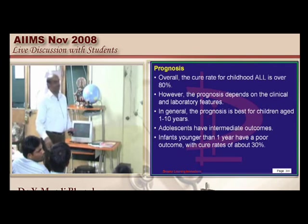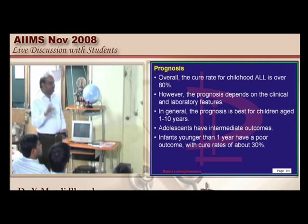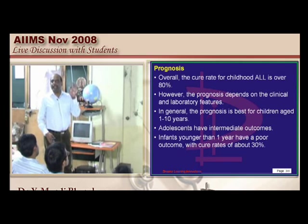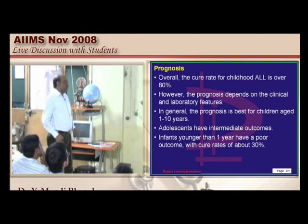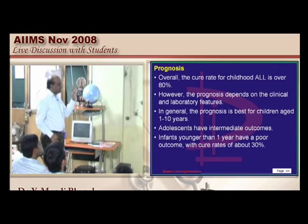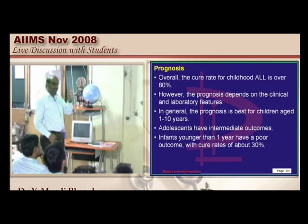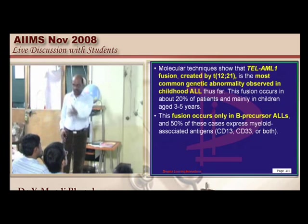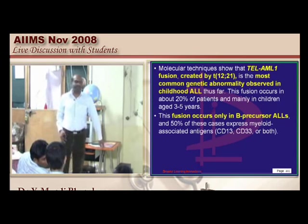There are specific chromosomal abnormalities to remember. The TEL-AML1 fusion has excellent prognosis. TEL-AML1 fusion is created by the t(12;21) translocation, which is the most common genetic abnormality observed in childhood ALL — likely to be a question in the next All India entrance exam.